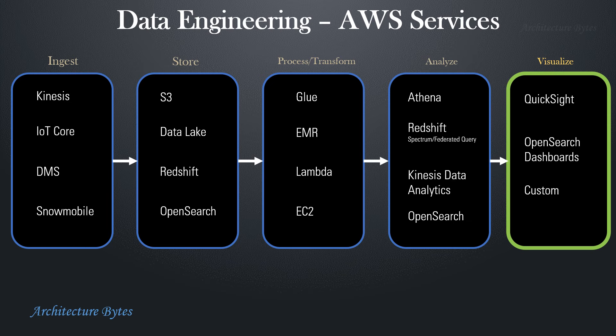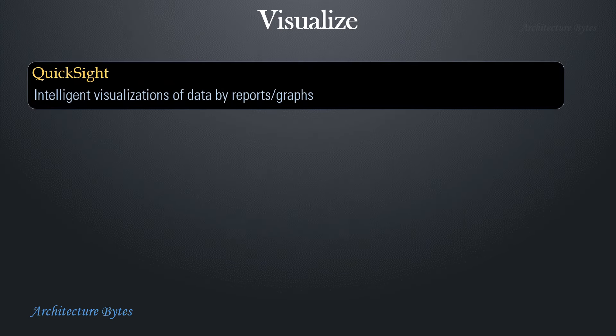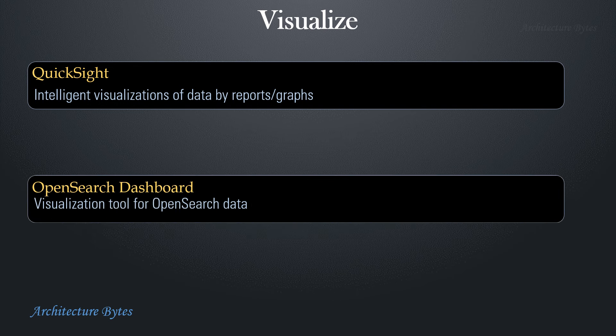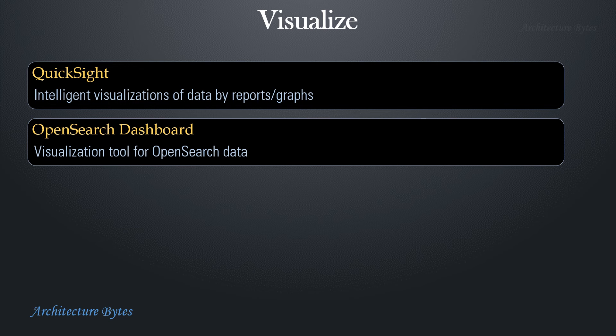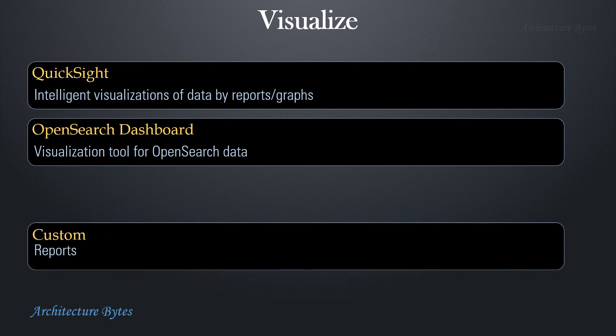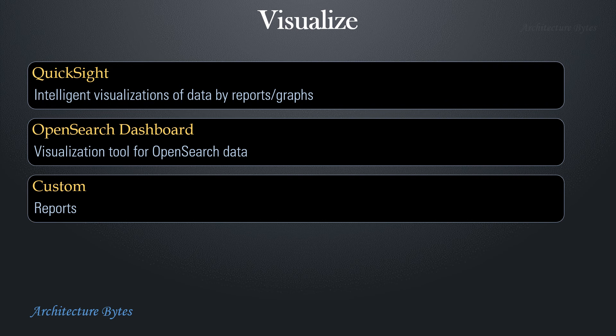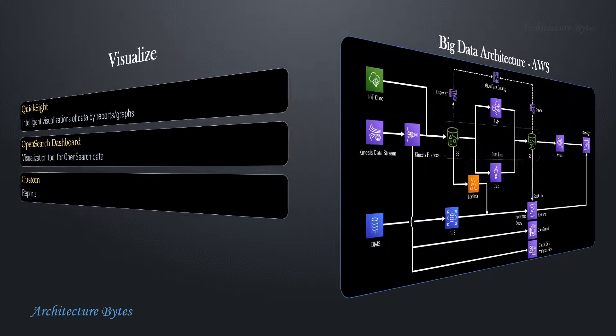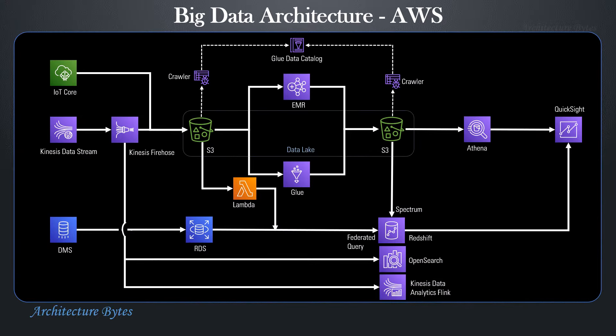Visualize: Amazon QuickSight provides intelligent visualizations of your data through reports, graphs, and so on. OpenSearch Dashboard is the visualization tool for OpenSearch data. In addition, you can write your own custom reports or visualizations by fetching processed data, for example from a data lake or a warehouse. Here is a generic architecture depicting how these services can work together. Let's look at some typical use cases to understand this better.